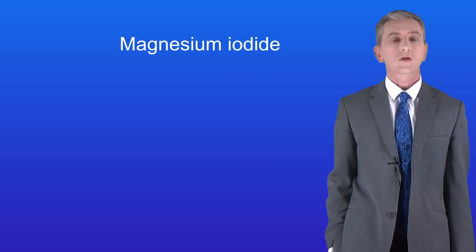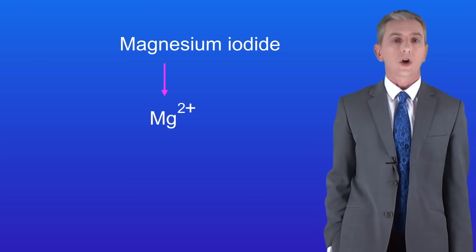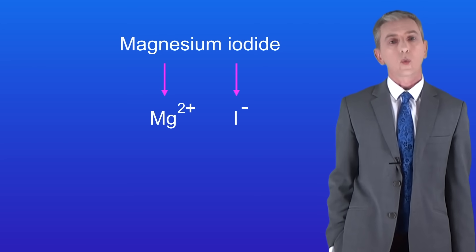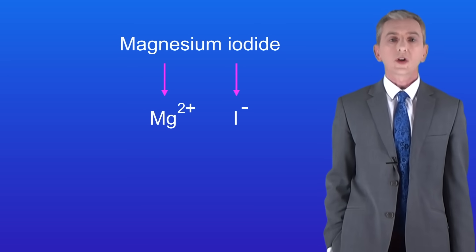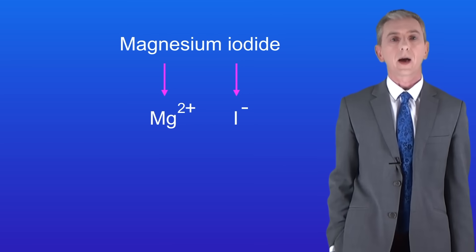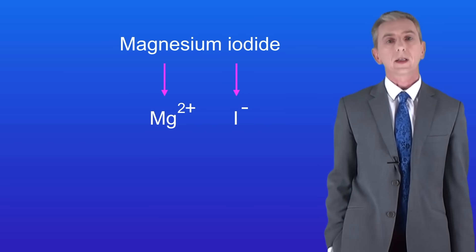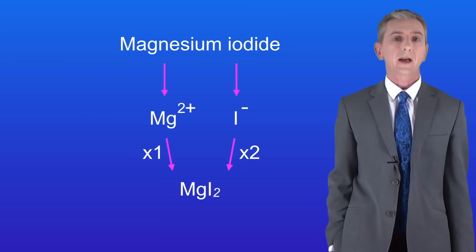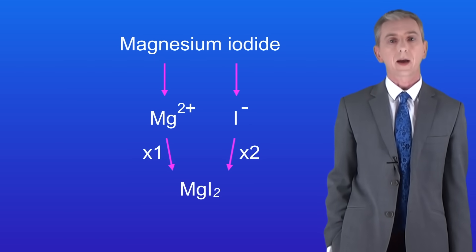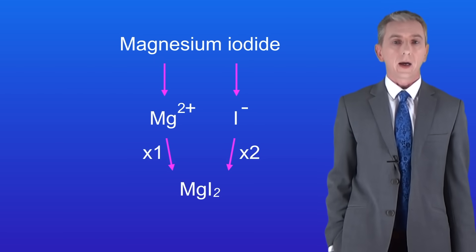Here's one for you to try: magnesium iodide. The magnesium ion has a 2+ charge and the iodide ion has a 1- charge. Pause the video now and work out the formula. In this compound we need two iodide ions to cancel out the 2+ charge on the magnesium ion, so the formula is MgI2.